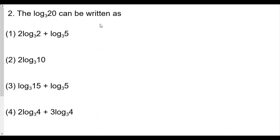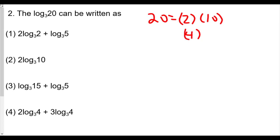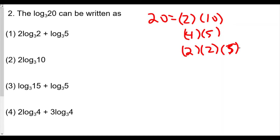Number two asks us to write log base 3 of 20 broken down. We want to find the factors of 20: 20 can equal 2 times 10, or 4 times 5, or using prime factorization, 2 times 2 times 5.